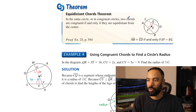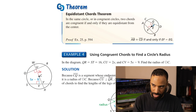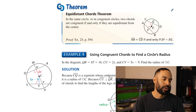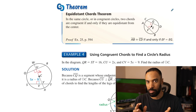The Equidistant Chords Theorem: in the same circle or in congruent circles, two chords are congruent if and only if they're equidistant from the center. The distance is measured perpendicularly, since that gives the shortest distance and the proper frame of reference. If the perpendicular distances EG and EF from the center are the same length, then the two chords are congruent to each other.